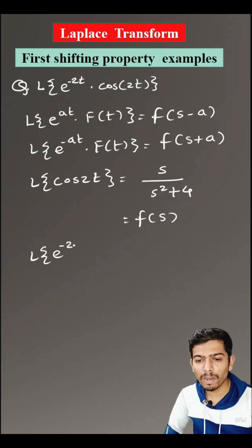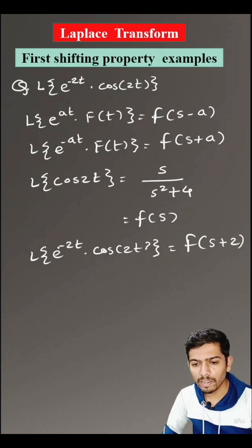Now, here Laplace transform of e to the power minus 2t into cos of 2t is equals to f of s plus 2 because here a is 2.